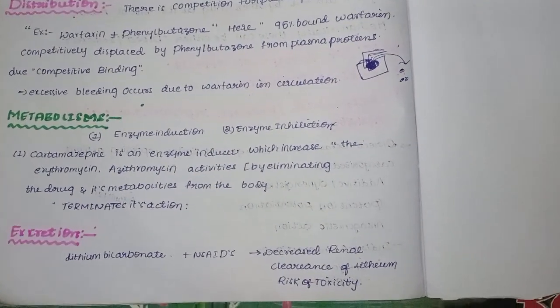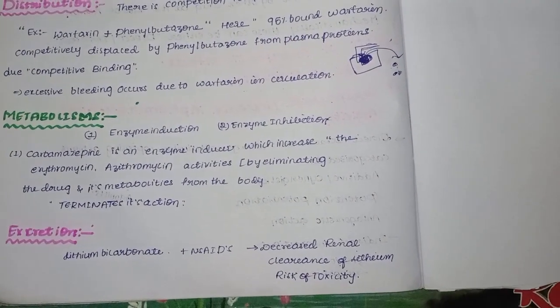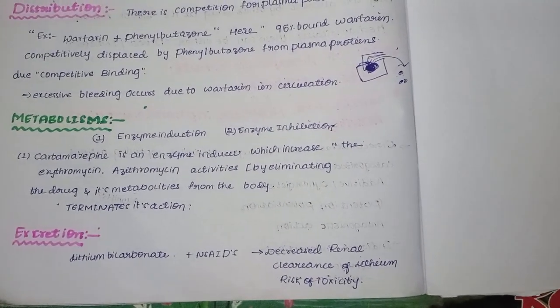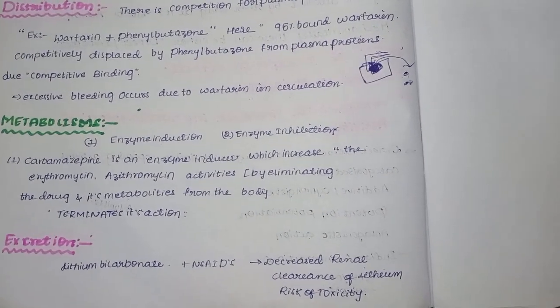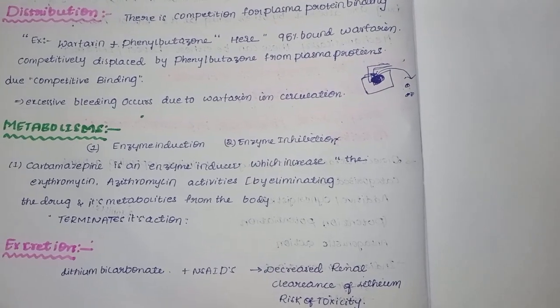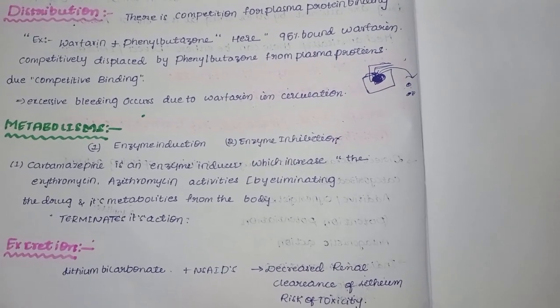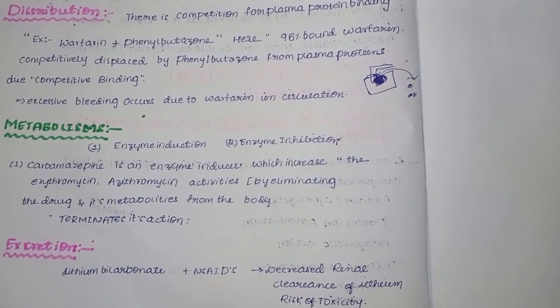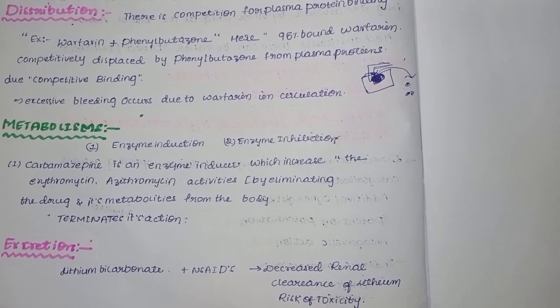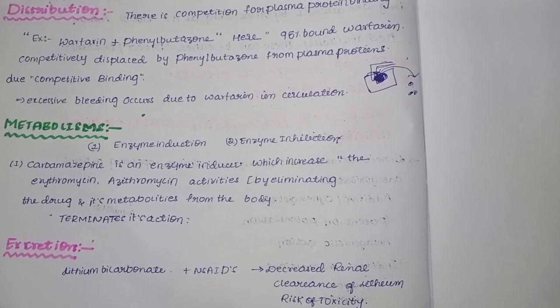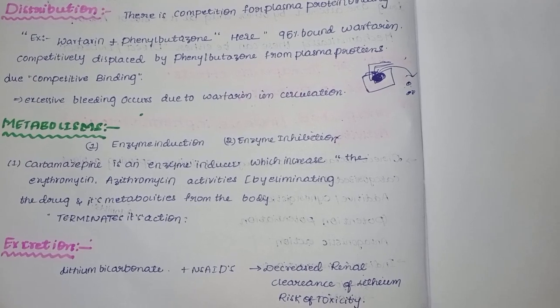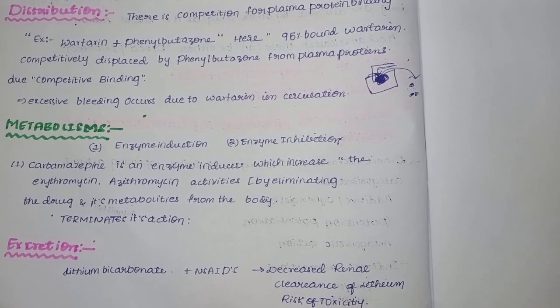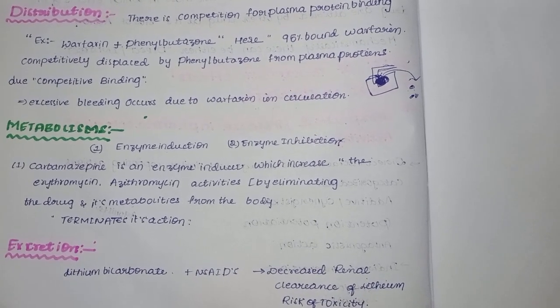Next is metabolism. Metabolism is biotransformation — the conversion of one chemical form to another form in a biological system. When a drug cannot be properly metabolized and remains in the body, it may cause toxicity and adverse drug reactions.